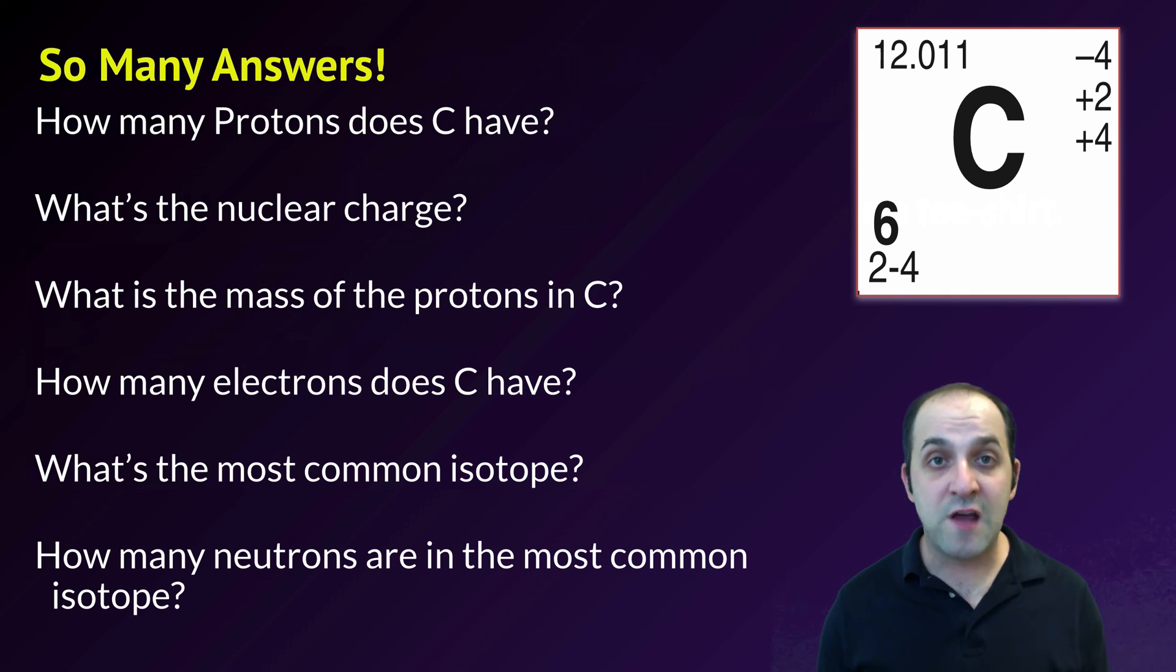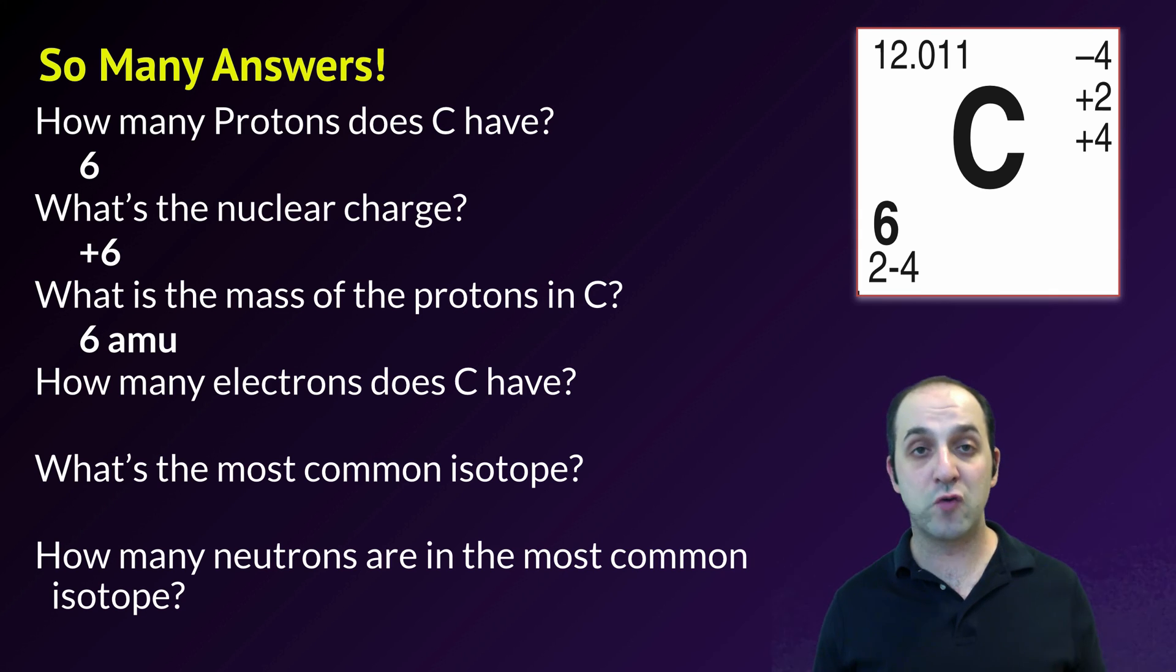Let's start from the top. Carbon has six protons and we know this because the atomic number for carbon is six. The atomic number for carbon is just the number of protons that it has. Since there are just six protons in the nucleus, that means that the nuclear charge is going to be positive six. That means that if we were to add up all of those protons together, they would have a mass of six atomic mass units. If we want to figure out how many electrons carbon has when it's neutrally charged, it's going to have an equal number of electrons to its number of protons, so that's going to be six again. We actually see this down at the bottom: we have the electron configuration which is two dash four. We don't really know how to interpret that yet, but if we add up two and four we get to six.